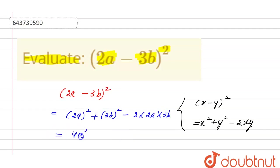So this is equal to 4a² + 9b² - 12ab. Thank you.